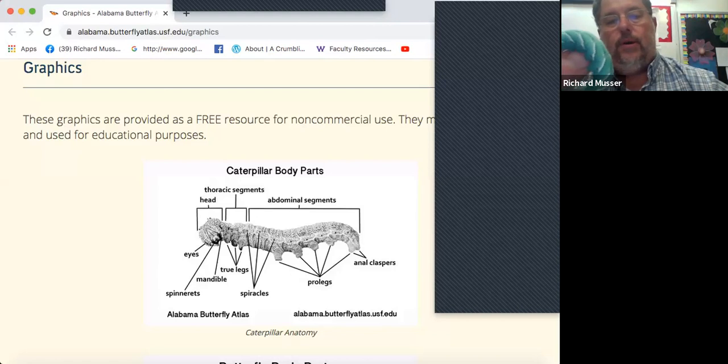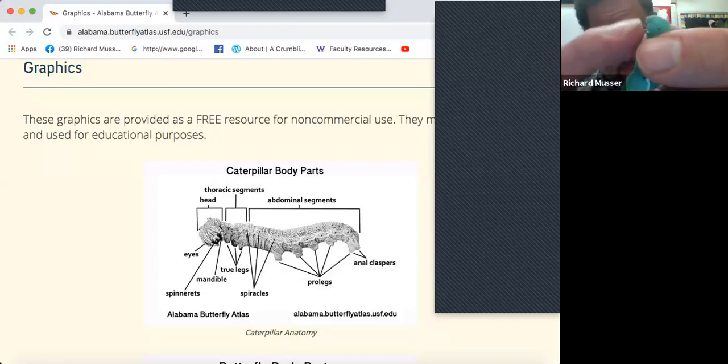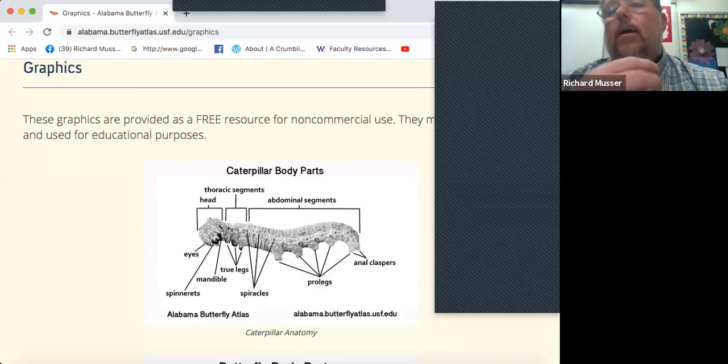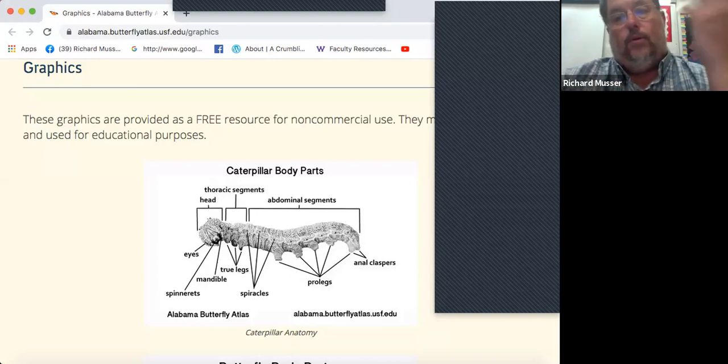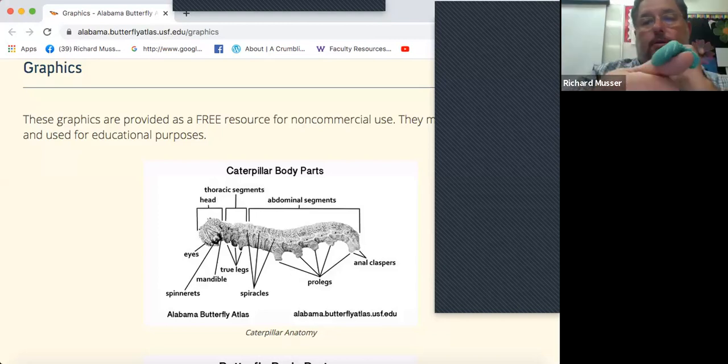This is the anal clasper down here. You see the spiracles and mandibles. The spinneret is kind of right underneath the mouth. It'll be almost like a little cone shape. Silk can come from that. There's silk moths or silkworms that can produce real silk that we wear, but these caterpillars can also lay it down as silk. When they're small they can use it for ballooning and helping to float or to cover themselves up.